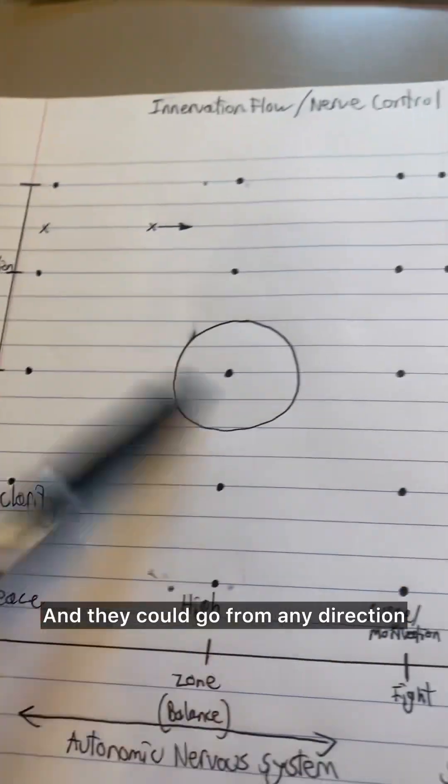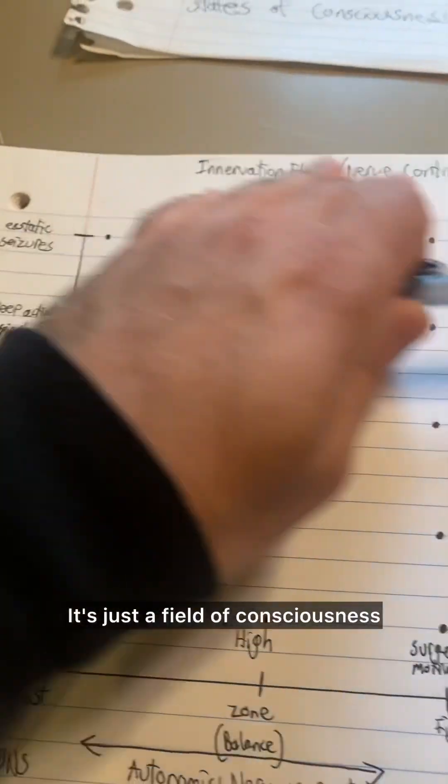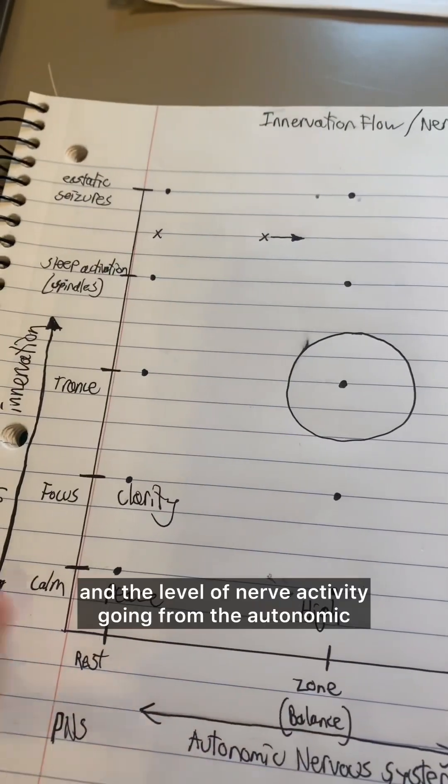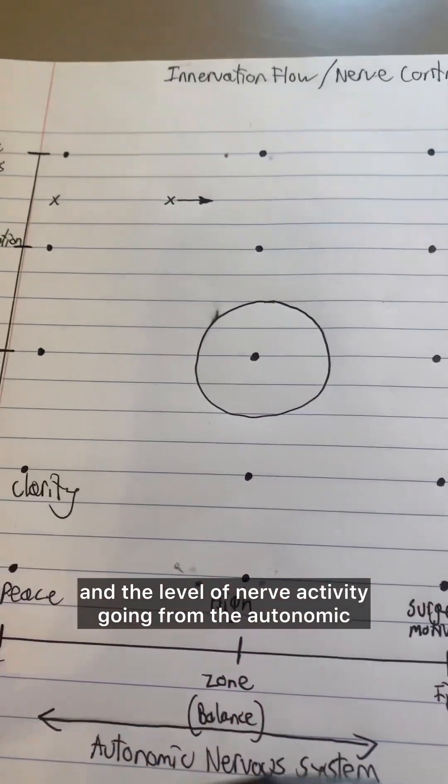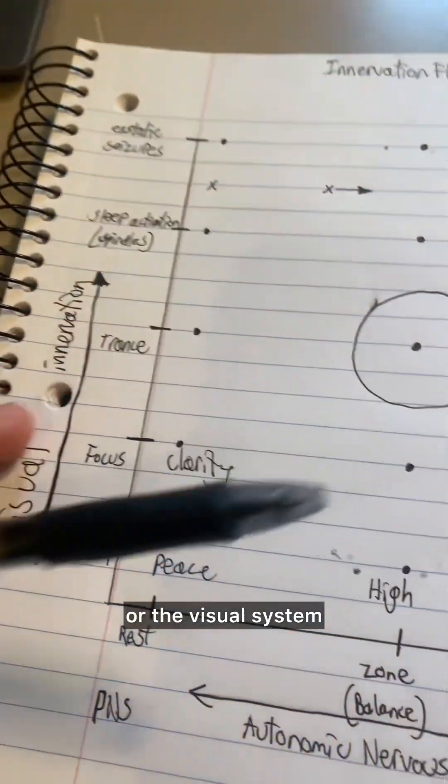And they could go from any direction. They could zigzag. They can jump around. It's just a field of consciousness and the level of nerve activity going from the autonomic or the visual system.